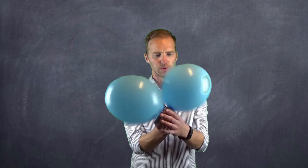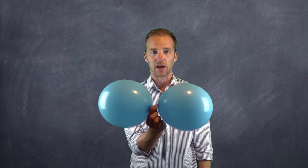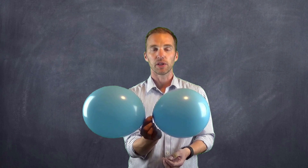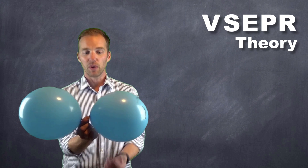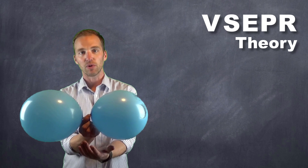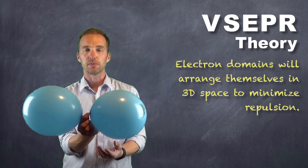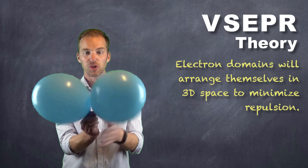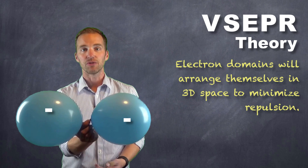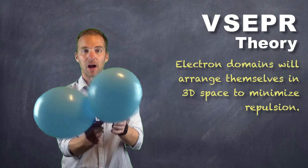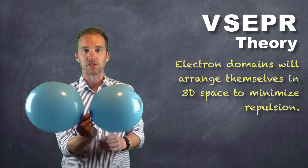We can see what happens with these balloons if we try to get them to interact: they arrange themselves in space to minimize the repulsion between them. Electrons, whether bonded or non-bonded, do the same. In fact, we have a theory called valence-shell electron pair repulsion theory, or VSEPR theory for short. It tells us that the electrons in these electron domains will arrange themselves to minimize the repulsive force between them, since they share a like negative charge, maximizing the space between them.